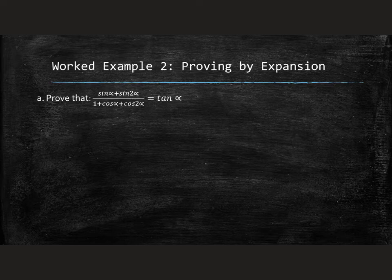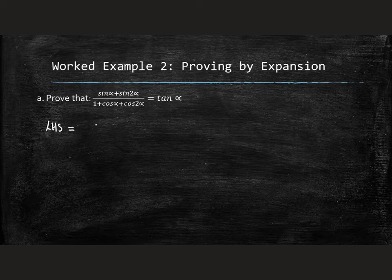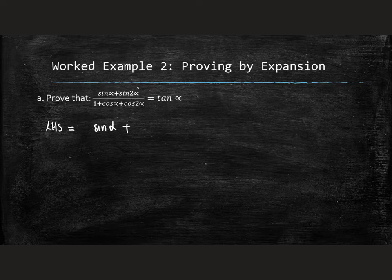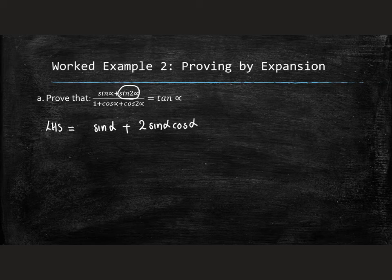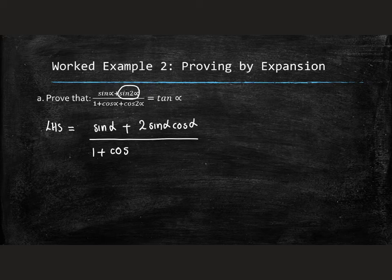When we're proving, we try to work with the side that we can do the most with. So out of these two, we've got the left-hand side. It's got quite a lot. So let's see. Sin α, we're going to keep a sin α. Let's expand the sin 2α into its expansion name. 2 times sin α cos α over 1 plus cos of α.